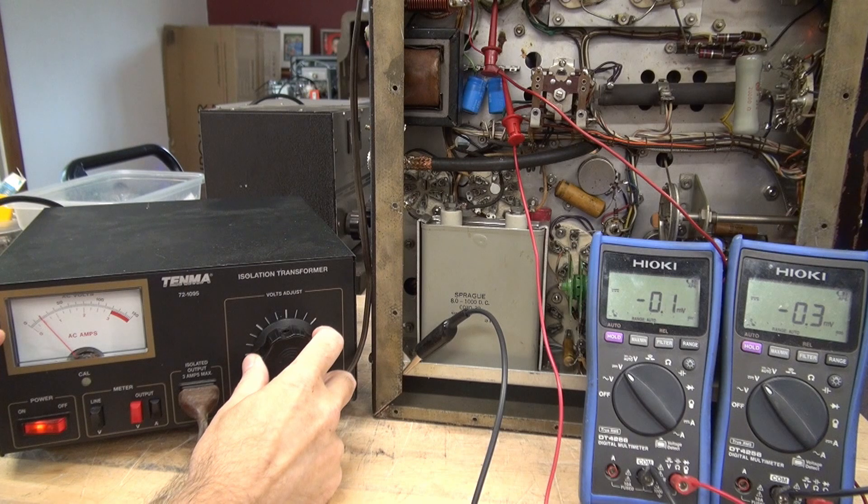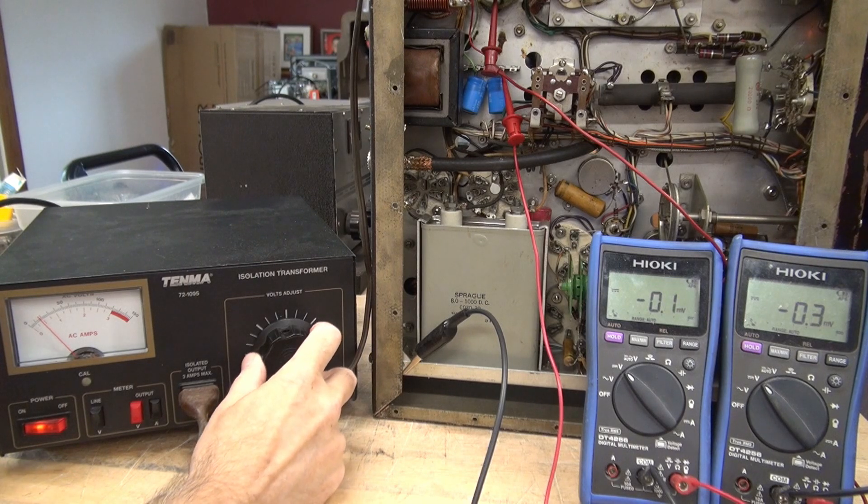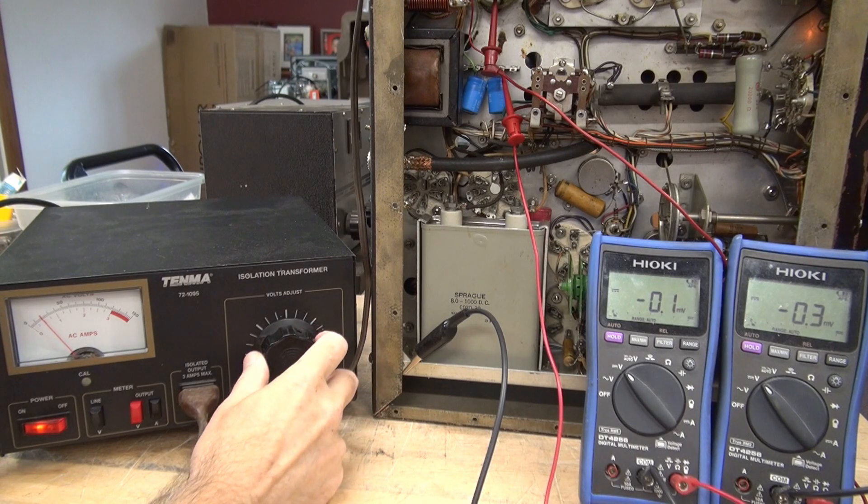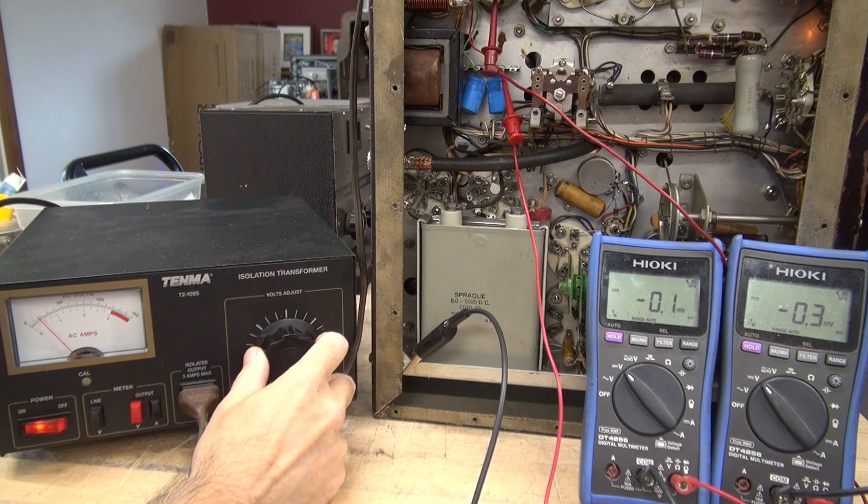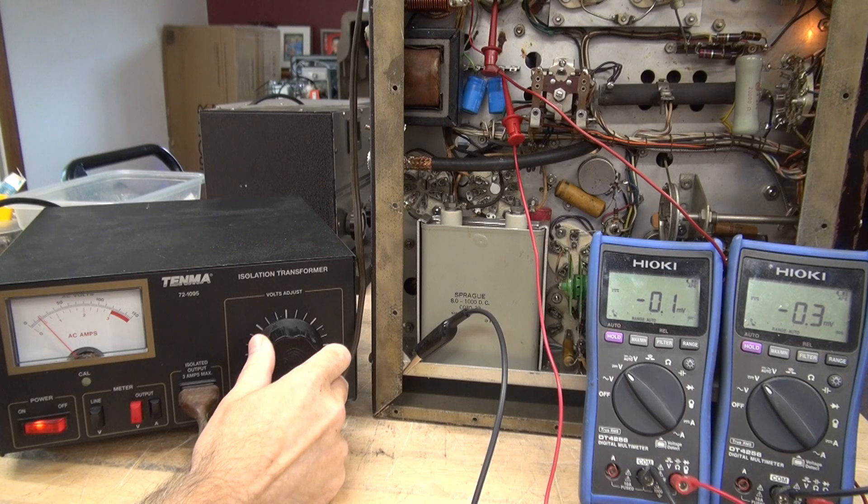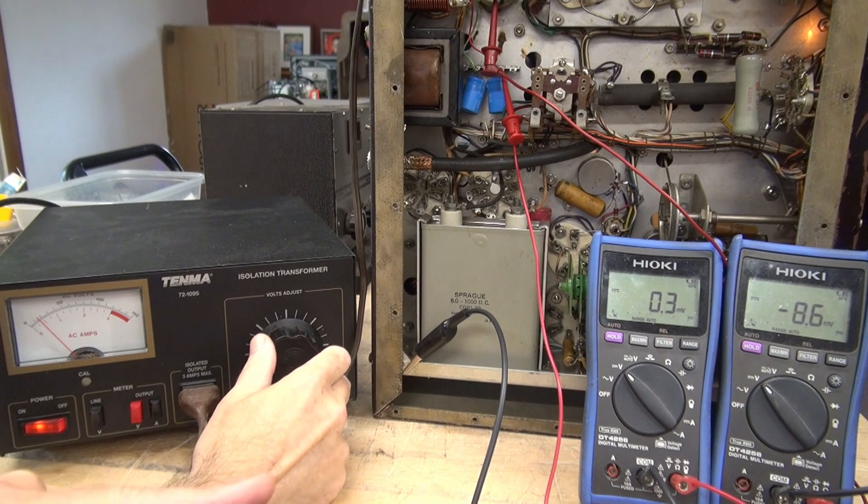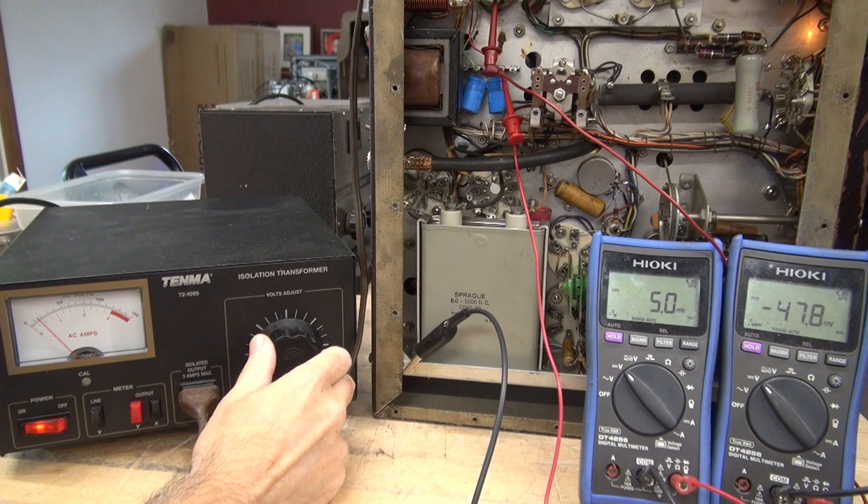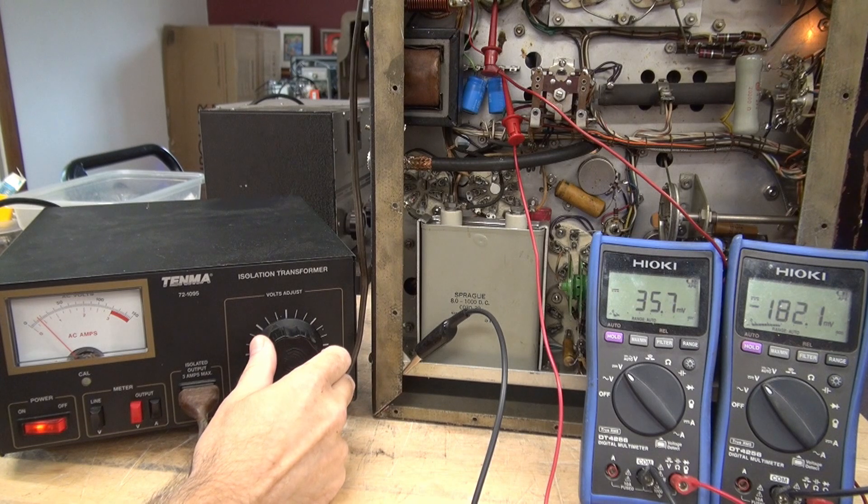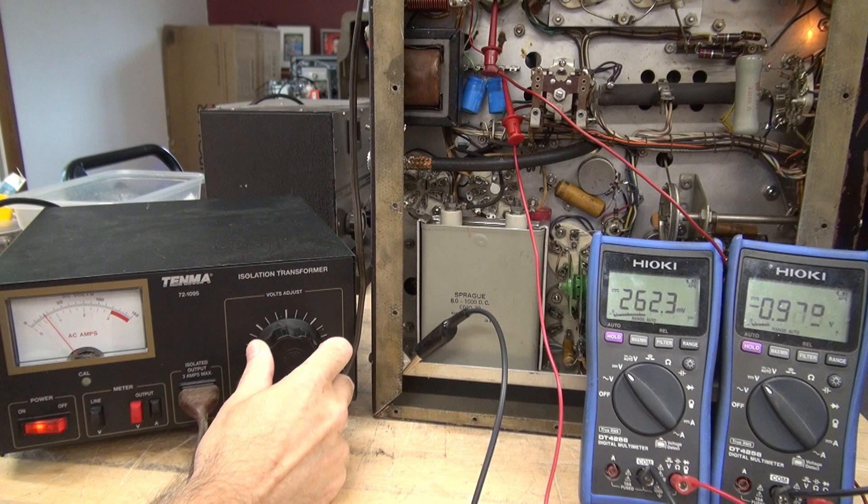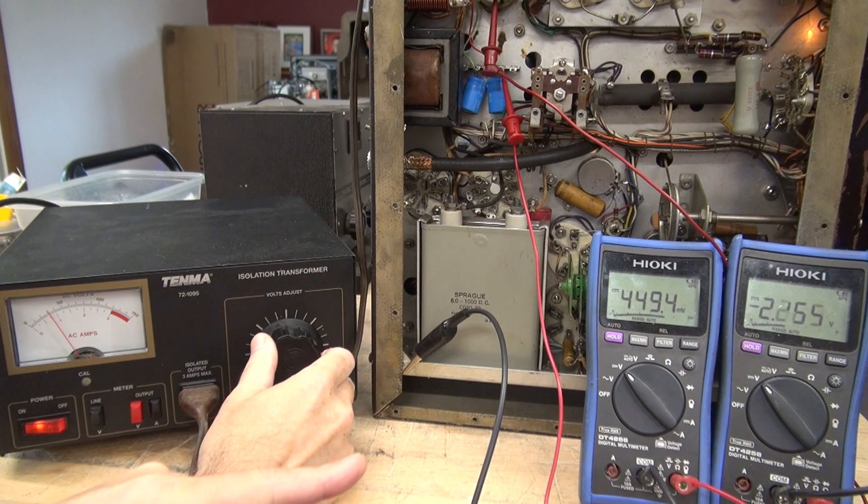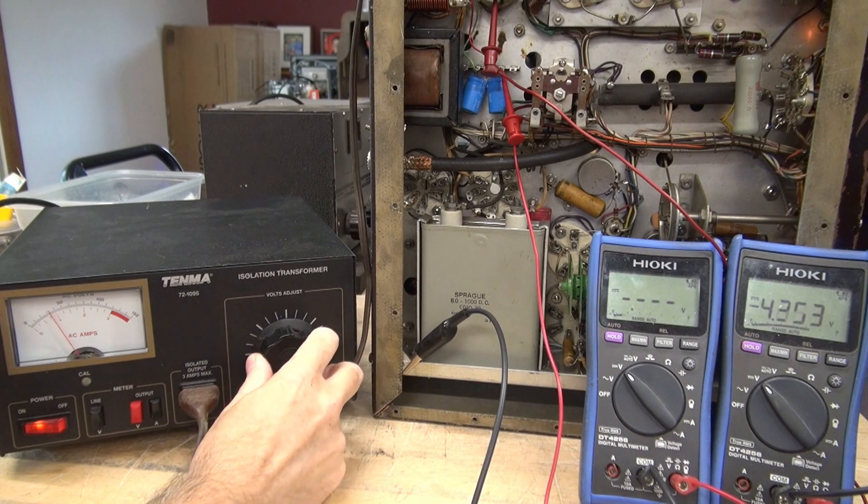I'm using a variac, you want to watch this current because if there's any problems you're going to see that current all of a sudden starting to raise. So far I have nothing on my meters but I do see the 6 volt lamp on in the Viking. Okay here comes my negative voltage and there is my 350 volts but look at my amp meter. Up, up, up. We've got a problem.